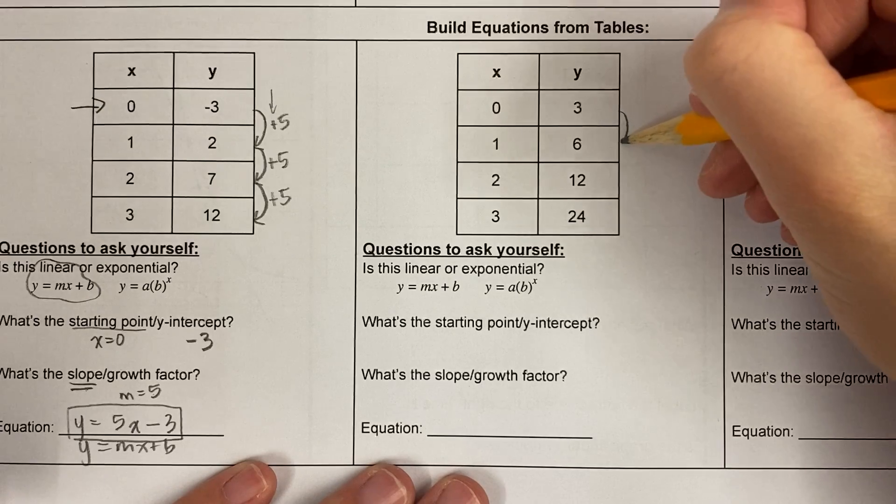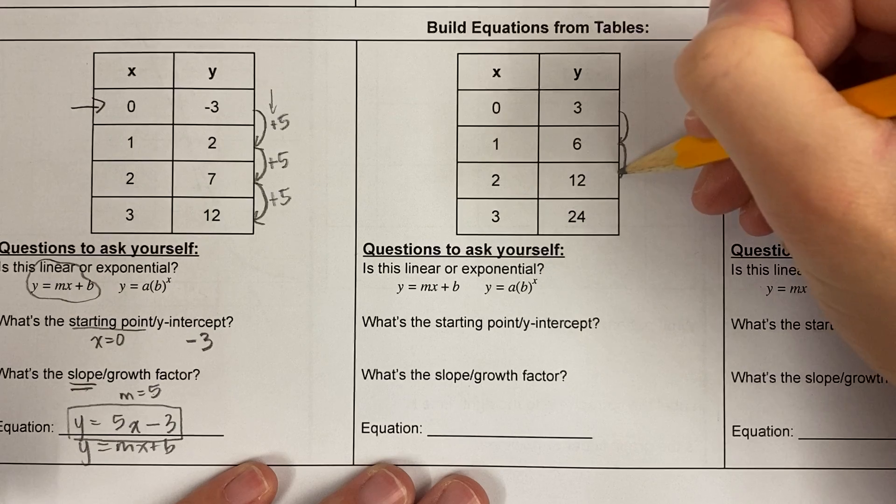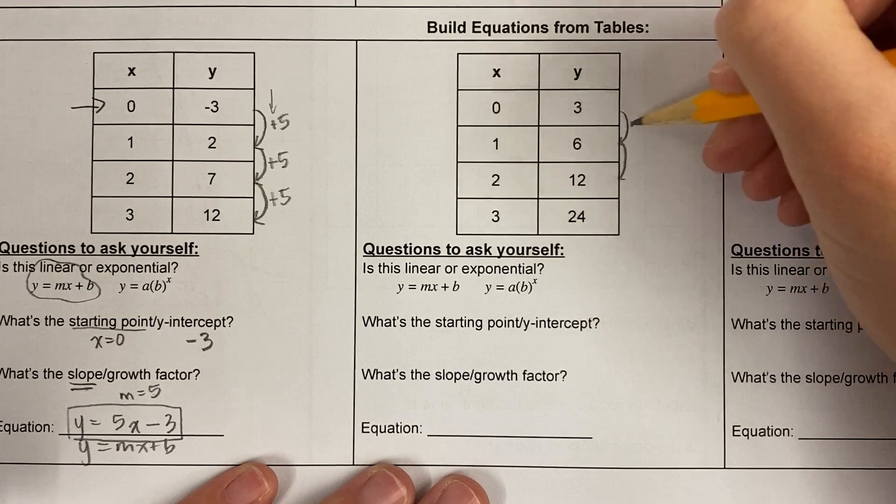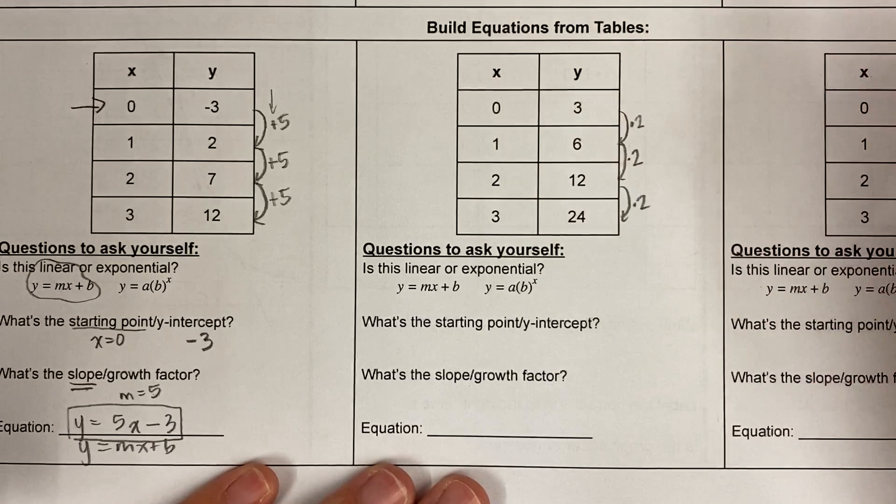Okay, so here what do I notice? Let's see, I'm going up by 3 and then up by 6. So I'm not adding. What I'm doing is 3 times what is 6? Oh, I'm multiplying by 2.